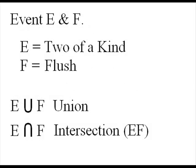Let's say we have event E and F, and E is getting two of a kind, and F is getting a flush. The event G, which could be E union F, means that either E occurred, F occurred, or both E and F occurred.